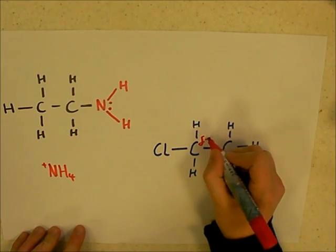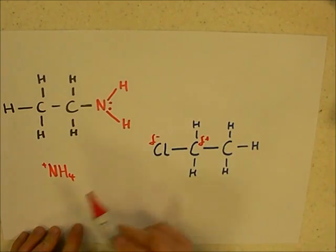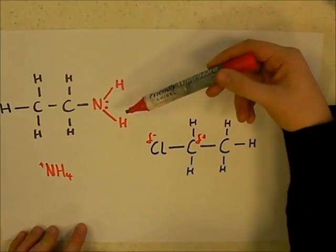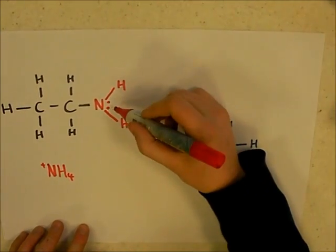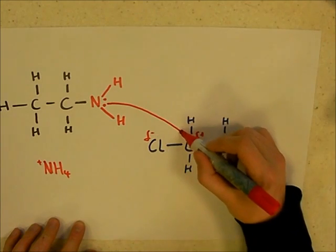Again, we've got a delta positive carbon and a delta negative chlorine, and this lone pair here is attracted to this carbon here. So that can attack there.